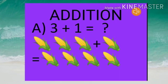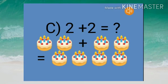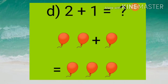Students, here we have more examples of addition. 3 plus 1: 3 corns plus 1 corn is equal to 4 corns. Now second example, 1 plus 1: 1 umbrella plus 1 umbrella is equal to 2 umbrellas. Now third example, 2 plus 2: 2 cakes plus 2 cakes is equal to 4 cakes. Now fourth example, 2 plus 1: 2 balloons plus 1 balloon is equal to 3 balloons.